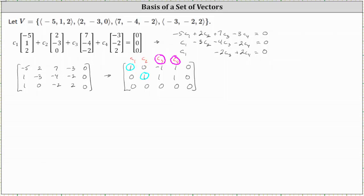So right away we know the system has more solutions than the trivial solution, and therefore the set of vectors is dependent. We determine the basis by the vectors that correspond to the basic variables c sub one and c sub two. The basis is the vector negative five, one, two — corresponding to c sub one — and the vector two, negative three, zero — corresponding to c sub two. Since c sub three and c sub four are free variables, the vectors seven, negative four, negative two and negative three, negative two, two can be written as linear combinations of the two basis vectors.